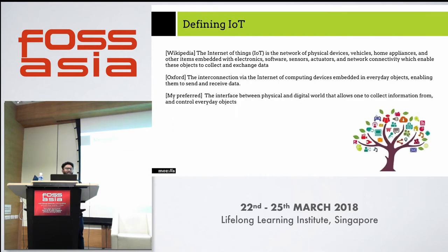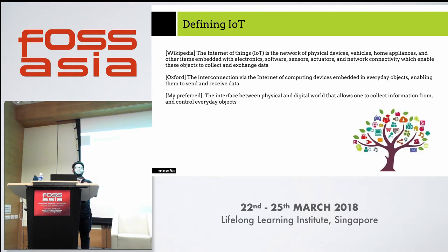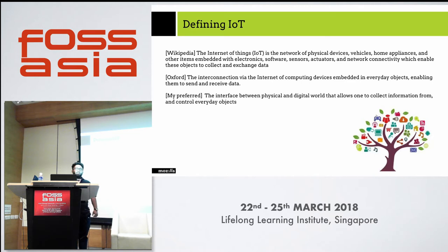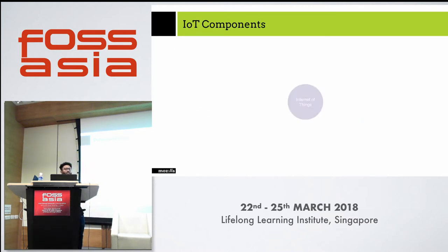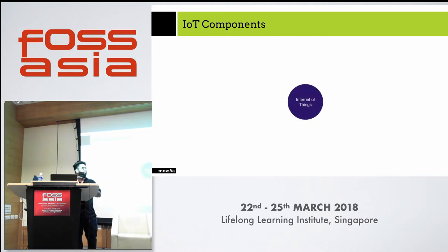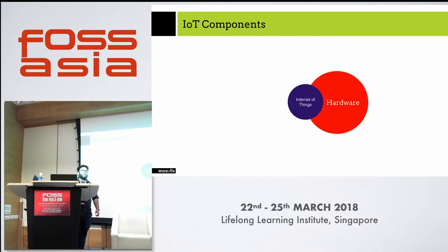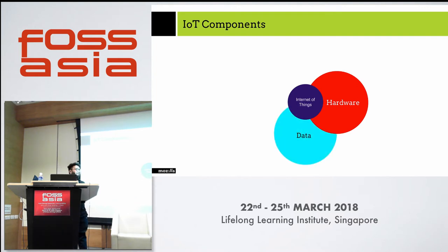Most of you might have a clear definition of what Internet of Things is. There are a number of definitions on the Internet. My personal favorite one is: it is the interface between physical and digital world that allows one to collect information from and control everyday objects. Let's divide the components of IoT into four parts. The first is the hardware — the tiny bits and pieces that sense information, and they communicate in a language called data.